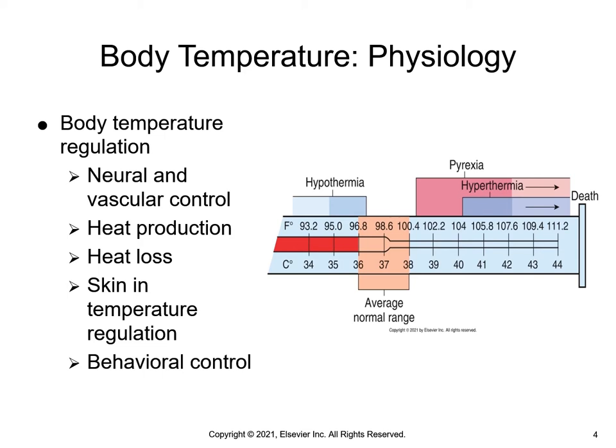Mechanisms of heat loss include sweating, vasodilation of blood vessels, and inhibition of heat production. Heat is produced by the body as a byproduct of metabolism. There are four different methods for heat loss: radiation, conduction, convection, and evaporation.